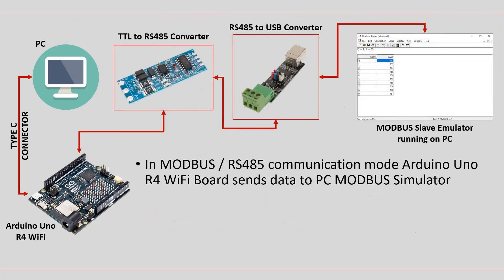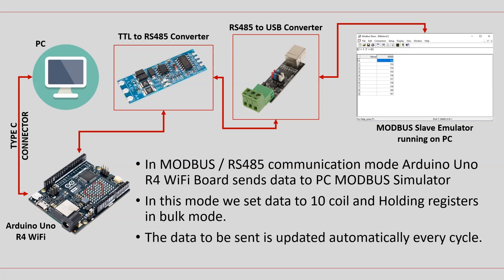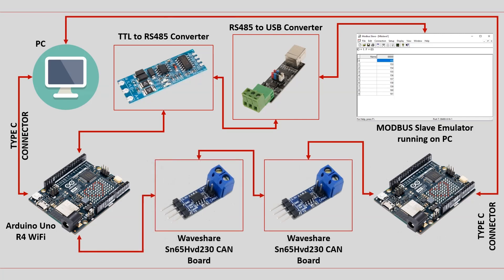In Modbus/RS-485 communication mode, the Arduino UNO R4 Wi-Fi board sends data to the PC Modbus Simulator. In this mode, data is sent to 10 coil and holding registers in bulk mode, and the data is updated automatically every cycle. It is worth noting that the Renesas RA4M1 microcontroller on the Arduino UNO R4 Wi-Fi board contains a CAN bus port. An external transceiver module is used to convert TTL level signals to CANH and CANL differential signals. Similarly, an external RS-485 module is used to convert TTL signals to RS-485 A and B signals.